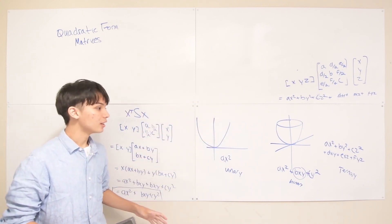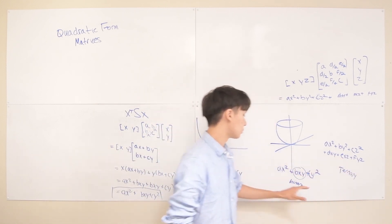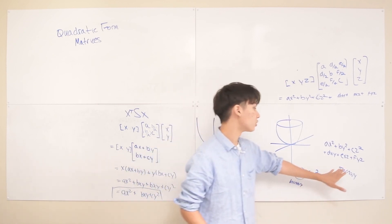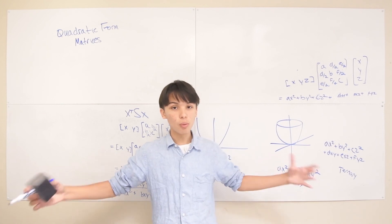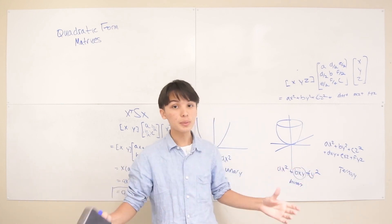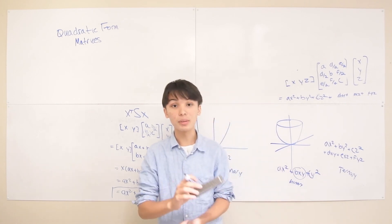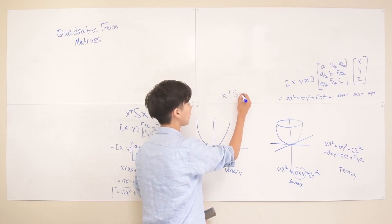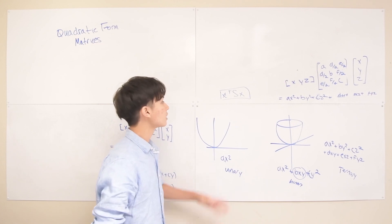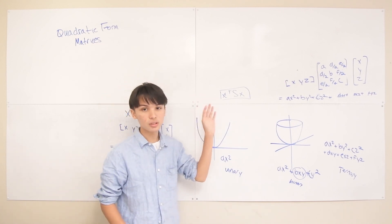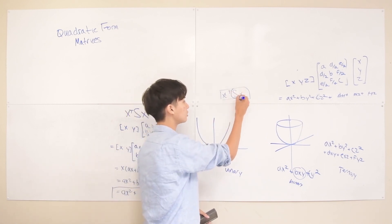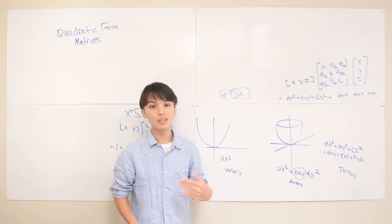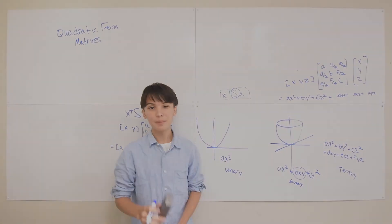This matrix way of expressing things — x transpose Sx — might seem unnecessary for binary or even ternary forms, since those are short to write out. But when you add more and more variables, the number of terms grows almost exponentially because you need all combinations between variables. More importantly, there's a much more important reason to use this representation: to understand the matrix S geometrically, which we'll be covering in the next lecture as a way to introduce positive semi-definite and positive definite matrices. Thanks for watching.